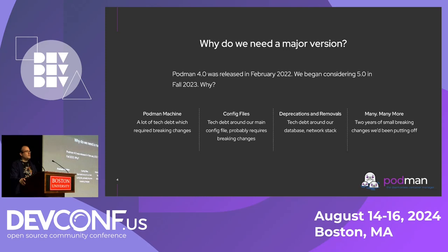So let's go into why we decided to do a major version. Why did we recently do a Podman 5? Our last major version, Podman 4, was a February 2022 release. We began considering a Podman 5 in the fall, with a target around February. And why do we start considering this? One reason: something called Podman Machine.